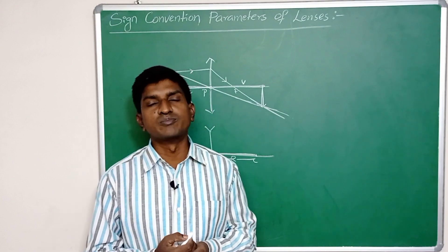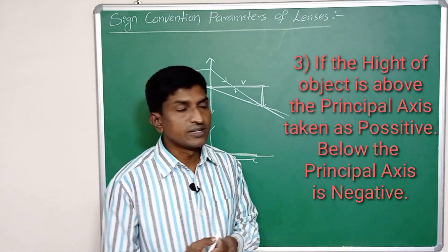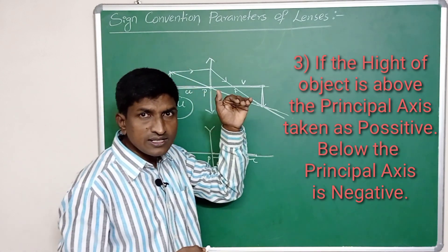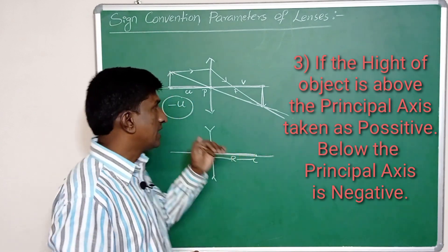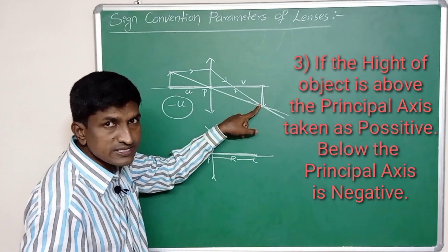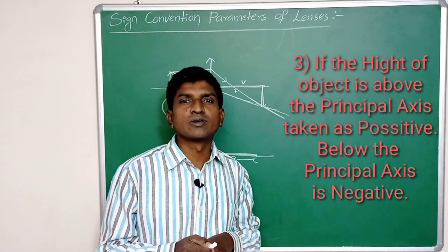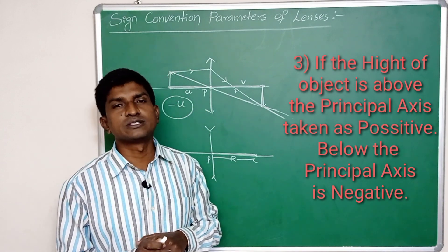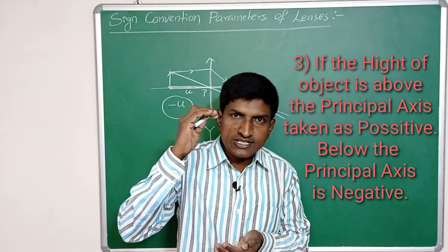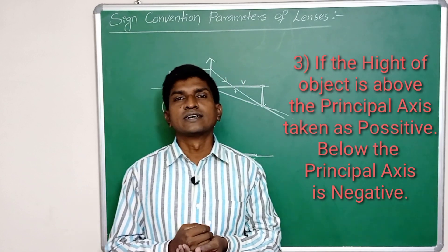The third sign convention is related to the heights of objects and images. If the height of an object or image is above the principal axis, then it is taken as positive. If it is below the principal axis — for example, if this image is below the principal axis — then that height is taken as negative. This applies whether it is the object or the image.